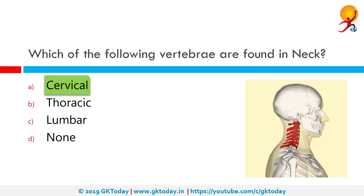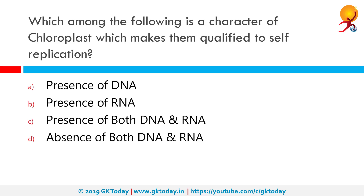Thoracic vertebrae in all mammalian species are those vertebrae that can also carry a pair of ribs and lie towards the tail relative to the cervical vertebrae. Which among the following is the character of chloroplast that makes them qualified for self-replication? The correct answer is presence of both DNA and RNA. Chloroplast DNA replication occurs when light is available in the photo-autotrophic culture and even under darkness in heterotrophic culture.